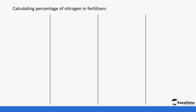The question is: how can we determine which is the best fertilizer to use? We start with the reaction of ammonia with sulfuric acid to form ammonium sulfate.